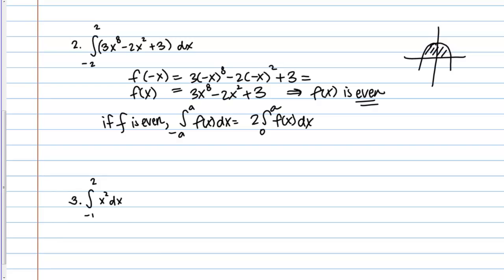So, let me actually make a little more room. So, what we're saying is this is 2 times the integral from 0 to A of 3x to the 8th minus 2x squared plus 3. So, if I quickly take this antiderivative.